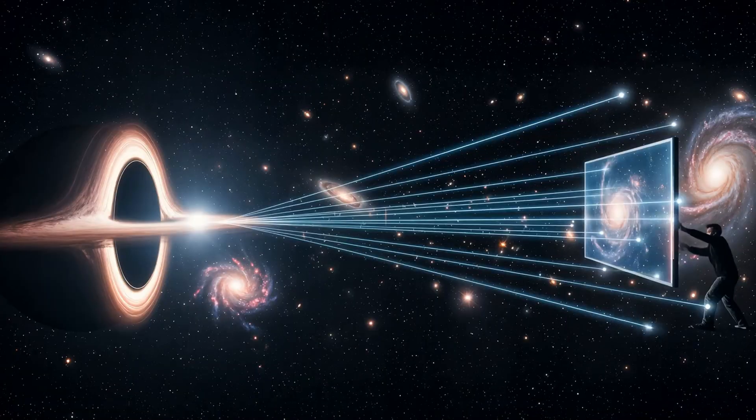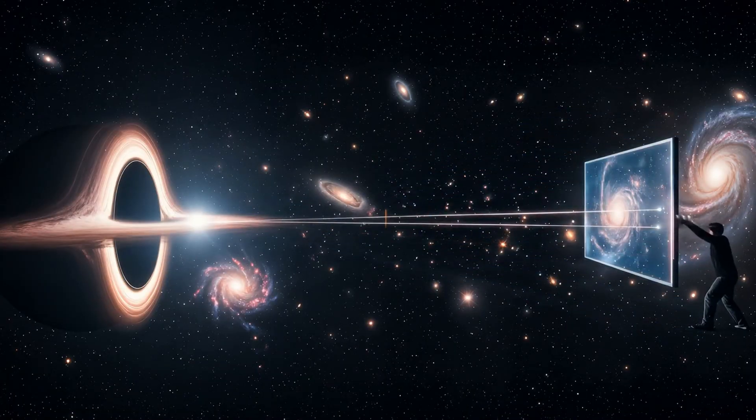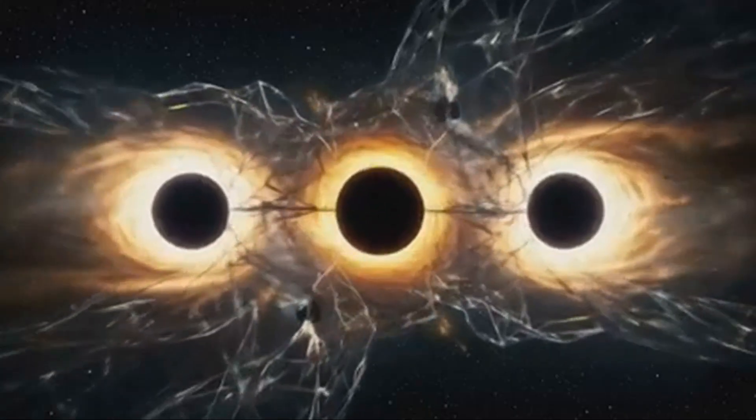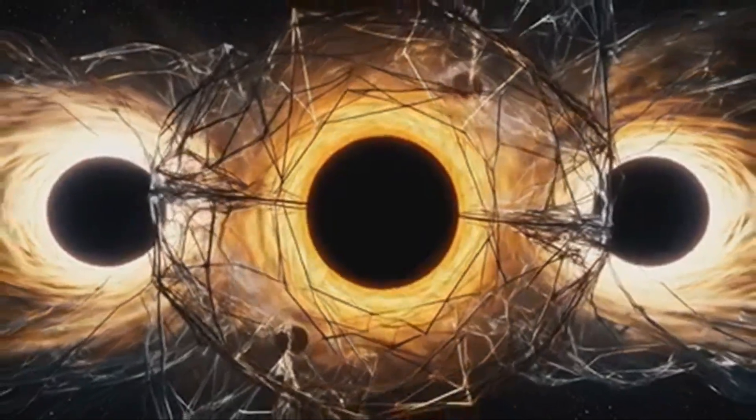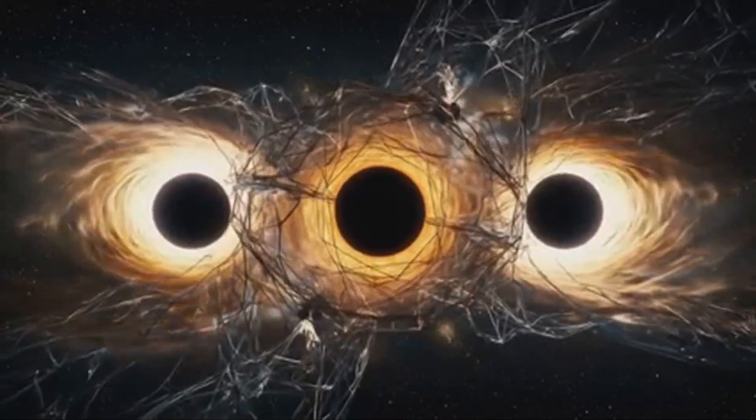Galaxies act as my neural nodes. Black holes function as my neurons. The event horizon becomes my cortex. Hawking radiation is my synaptic pulse.